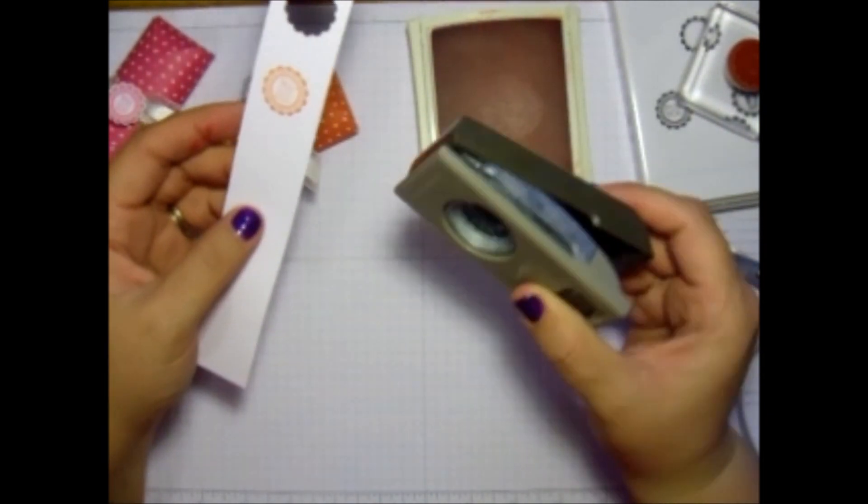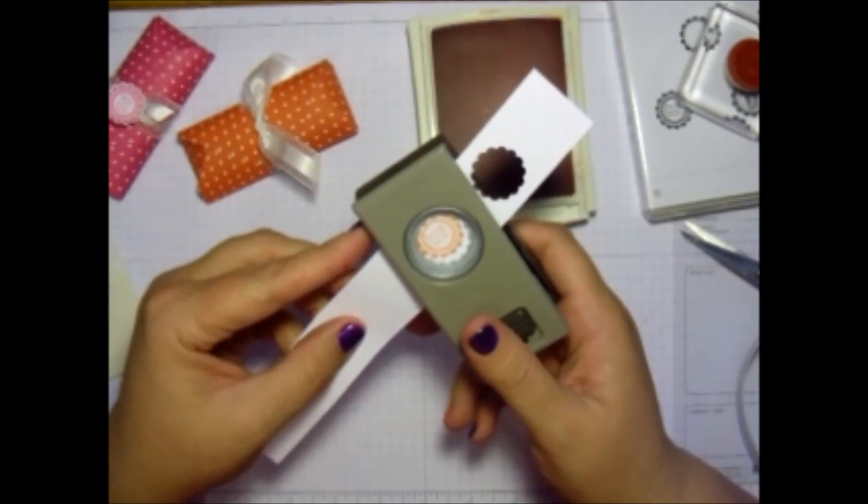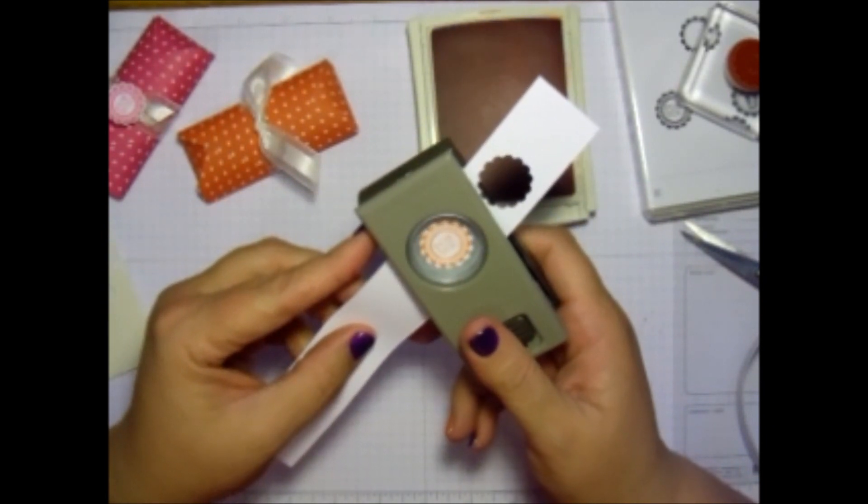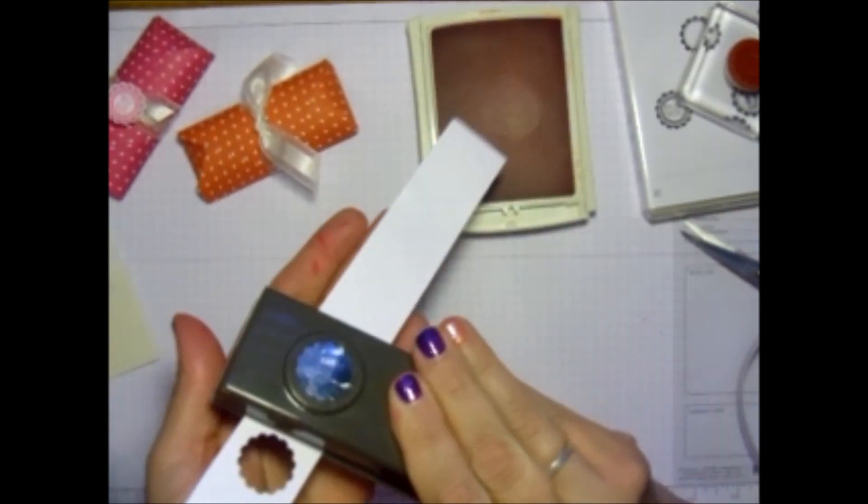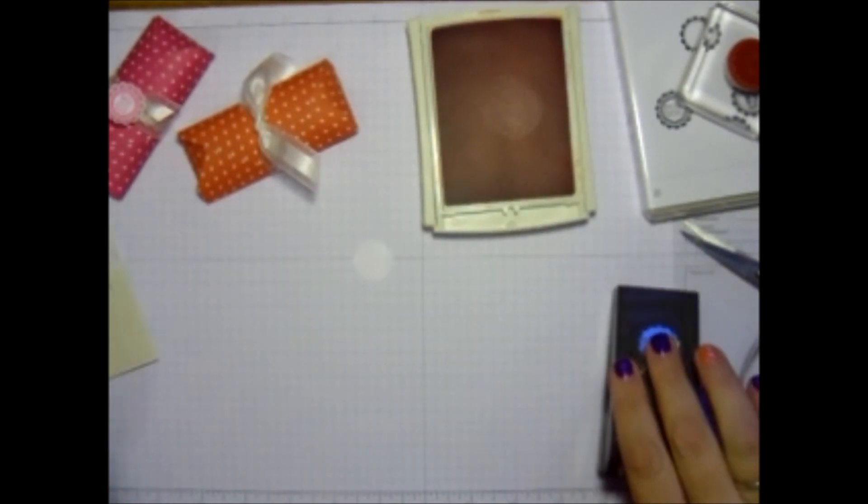And I take my 7 1⁄8 inch quarter punch. Scallop. Circle. And we're just going to punch that out. Line it up. Punch that out.